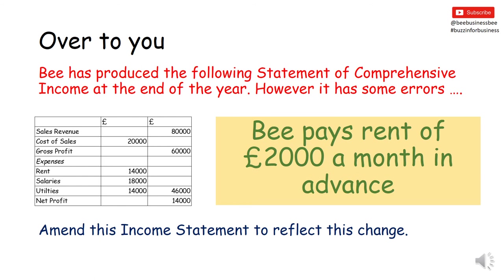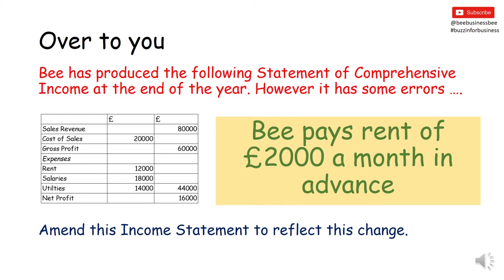Now is a good time to have a go yourself. B has produced the following Statement of Comprehensive Income at the end of the year, but it's got some errors. B needs to pay rent of £2,000 a month in advance. You need to amend this income statement to reflect the change. Hopefully you've first amended the rent section, taking it down from £14,000 to £12,000 because it related to a payment in another trading period. Then amend the Total Expenses to £44,000, and increase the net profit to £16,000, because net profit has got bigger as a result of this.